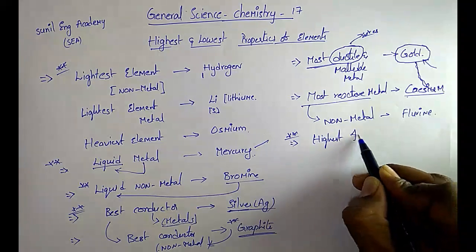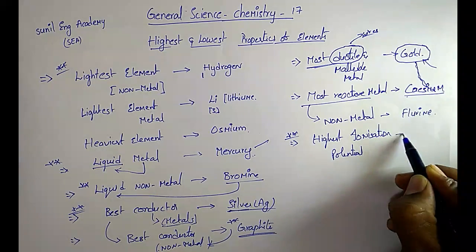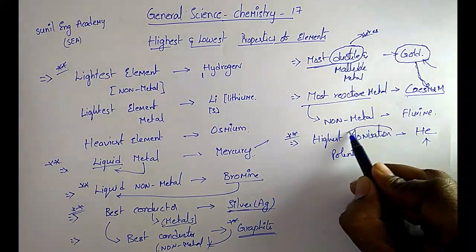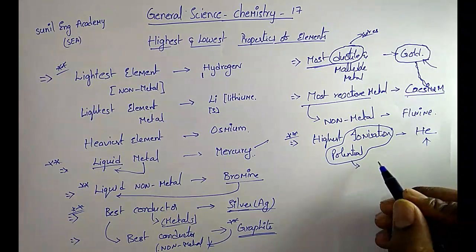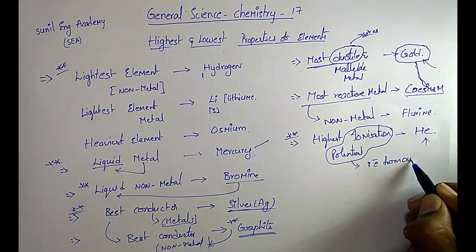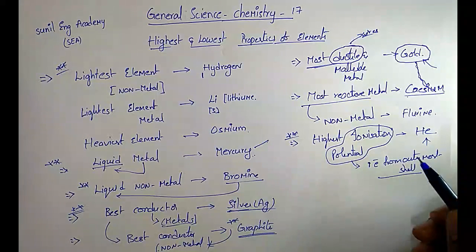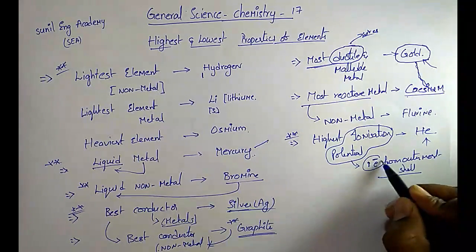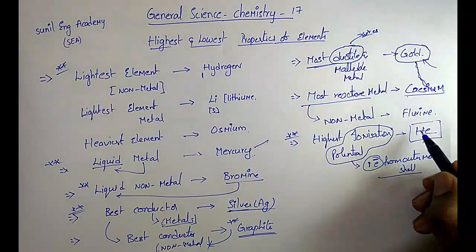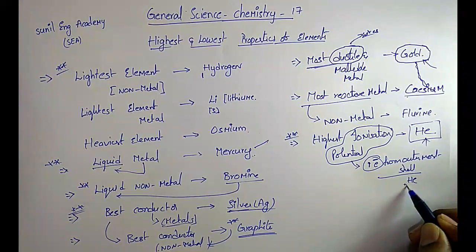The next very important one: highest ionization potential. The element with the highest ionization potential is helium, which is a noble gas element. Ionization potential is the energy required to remove one electron from the outermost shell. For helium, it is a noble gas and a zero group element — it has a completely filled configuration.